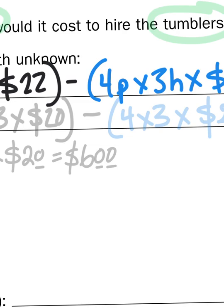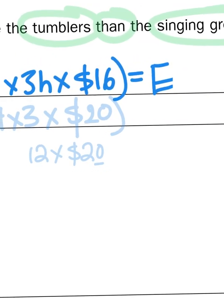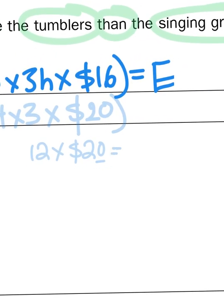And then when I get to 4 times 3 times 20, well, I know that 4 times 3 is 12. And then 12 times 20 is just like saying 12 times 2 with the 0 behind it. And you and I both know that 12 times 2 is going to give me 24. 24 tens, otherwise known as 240.